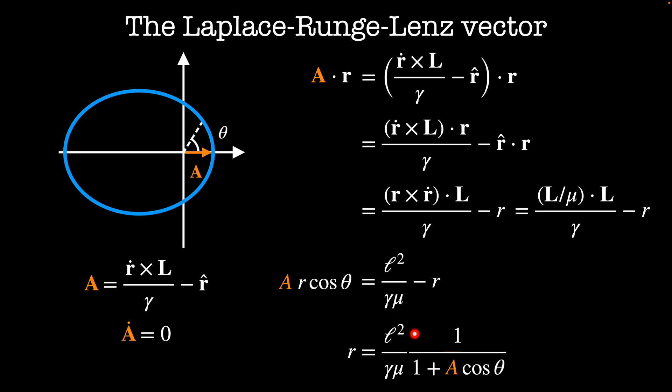If we rearrange this to solve for the radius r, we recover the equation of the orbit: r is equal to the angular momentum squared divided by the force constant gamma times the reduced mass mu, times 1 divided by 1 plus a times cosine theta, where the magnitude of A plays the part of the eccentricity of the orbit epsilon. It's not surprising that the eccentricity would be a conserved quantity — after all, it defines the shape of the orbit and therefore cannot change throughout the dynamics. So what does any of this have to do with Hamiltonian mechanics? We just did a little vector algebra to arrive at these results.